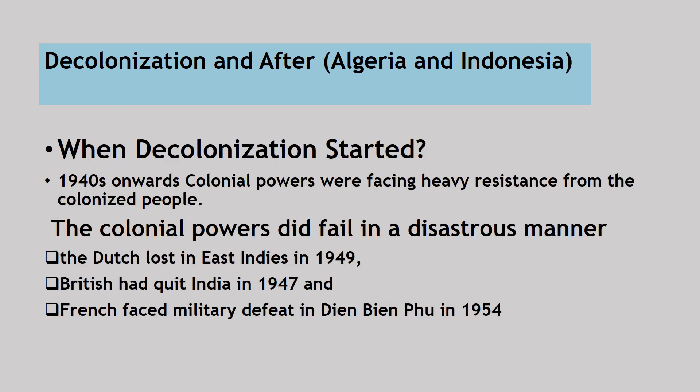When did decolonization start? The political change occurred around the 1940s and onwards, and it was at a global scale, quite dynamic. Almost every country experienced decolonization at that time or after. Colonized powers were facing heavy resistance and heavy hatred from colonized people, and colonial powers did fail in a disastrous manner. For instance, the Dutch lost East Indies in 1949, the British had to quit India in 1947, and the French faced a great military defeat in Dien Bien Phu in 1954. Let us now understand the process of decolonization through detailed examples of Algeria and Indonesia in the next two parts of the video.